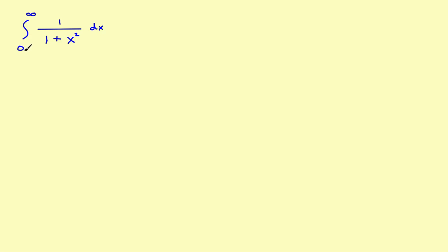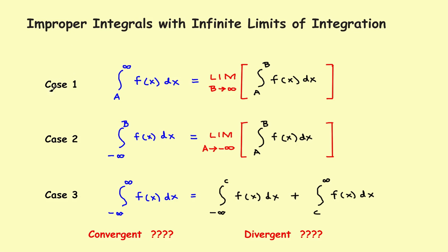The problem looks like this — we're going to find the integral from zero to infinity. Looking at the rules we had before, this will be another case one type problem, going off to the right from some fixed number a to positive infinity. We'll use the same two steps as last time: first, find the definite integral from a to b, then take the limit as b goes to infinity to get the integral all the way out to infinity.